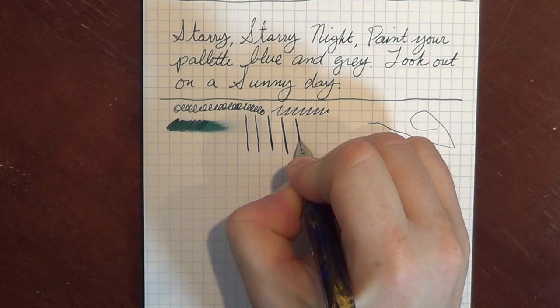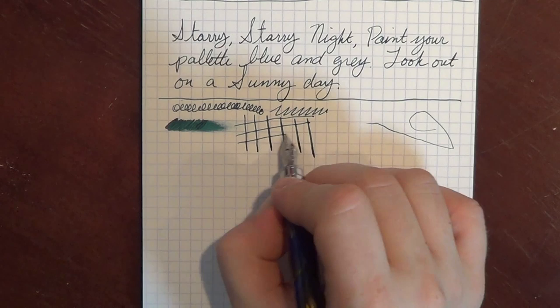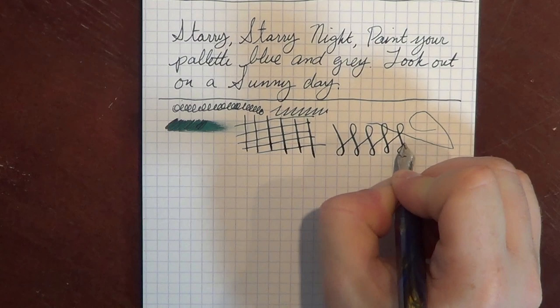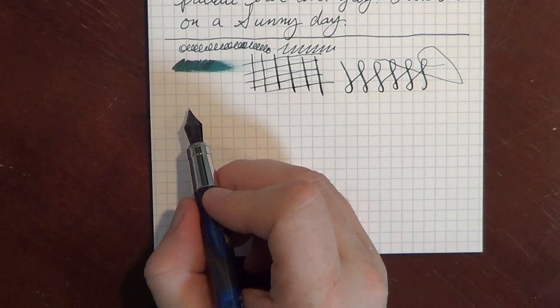In terms of line variation, there is a little bit. A little bit more than we saw with the medium. But again, this is a steel nib. You're not going to be expecting much line variation because it's not a flexible nib by any stretch of the imagination. So you can see just a little bit of line variation, but it's not much. Certainly more than we saw in the medium on the Salvador Dali.